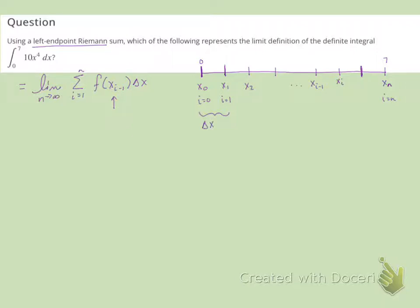The width of the rectangles is delta x. And to find the width of the rectangles, we take the entire length of the interval, which in this case is 7 minus 0, and we're going to divide it up by how many rectangles we have. So divide it up by n, which is going to give us 7 over n.